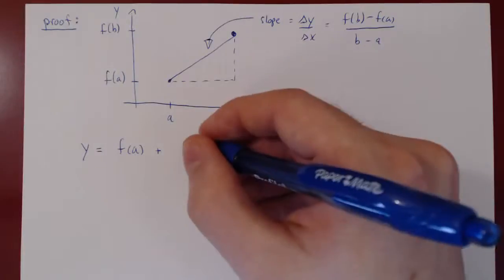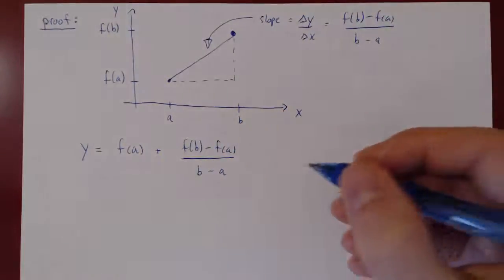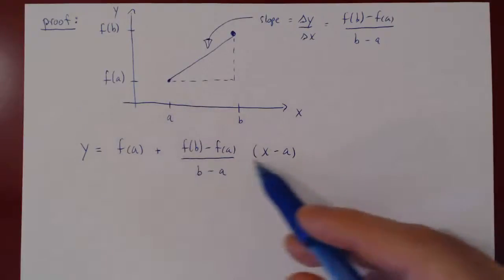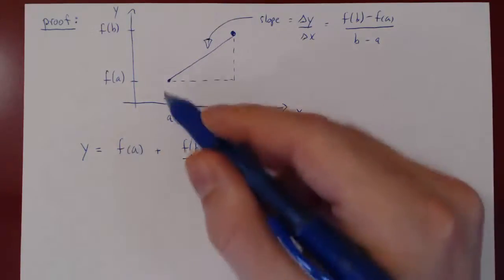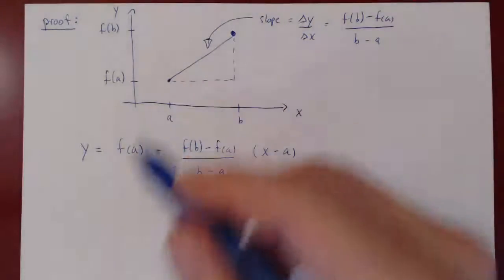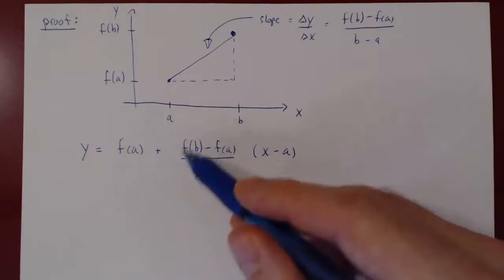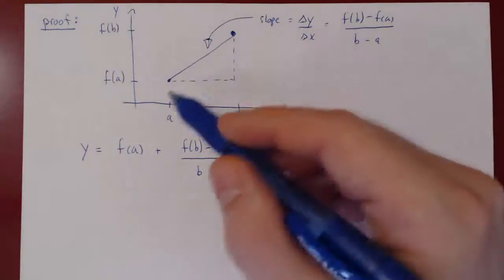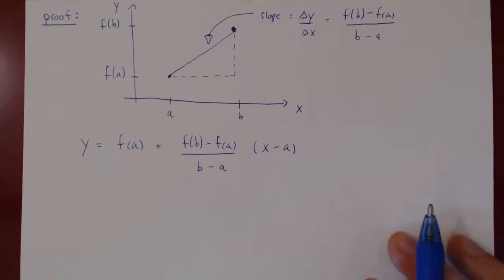The equation of the line is y equals f(a) plus the slope — f(b) minus f(a) over b minus a — times (x minus a). Let's verify: at x equals a, you have a minus a which is zero, that term vanishes, and the y-value is f(a), so the line passes through (a, f(a)). The coefficient of x gives the slope. So this is the equation of the line passing through (a, f(a)) and (b, f(b)).